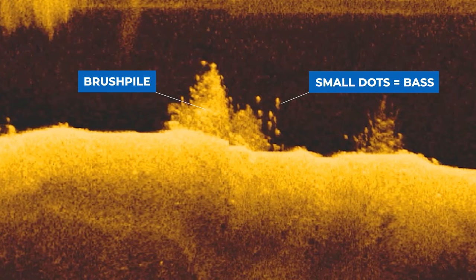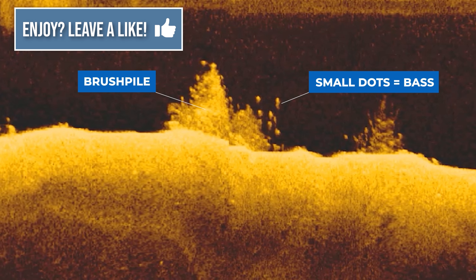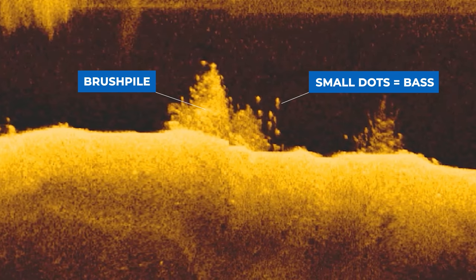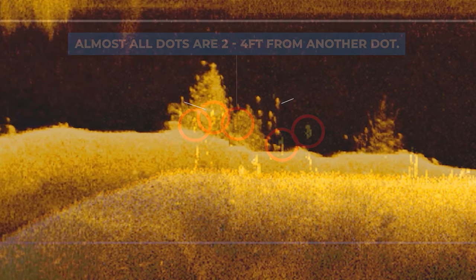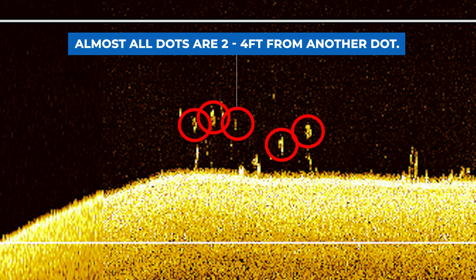In this example, you can see a brush pile and just to the right, three or four small dots. These are actually bass, and while these dots are pretty small, you can still see them very clearly and you can also see some target separation where the dots are separated by black space. This is one of the key indicators that you're actually looking at bass, and I've explained how to identify bass on your down imaging in another video.